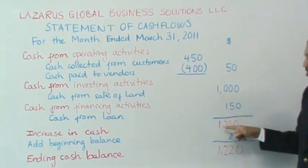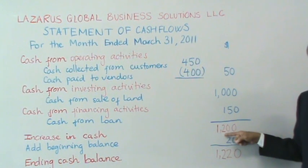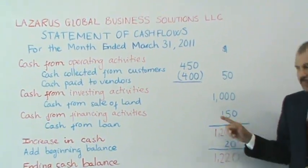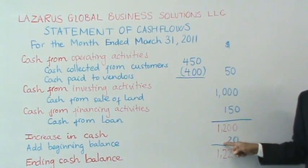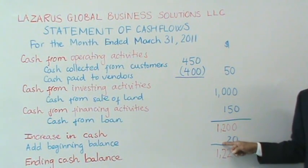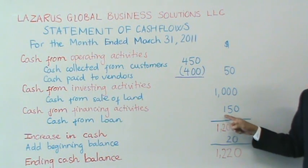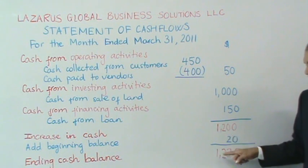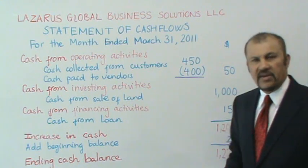When you add up all of these numbers, you end up with $1,200 of net cash inflow coming in this month from the three sections combined. Now below that, let's assume you had started off the month with a $20 cash balance. So if you started with $20 and received $1,200 net during the month, you'll end up with an ending cash balance of $1,220.